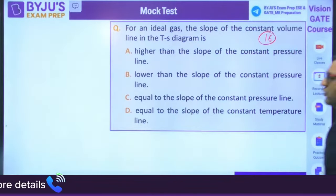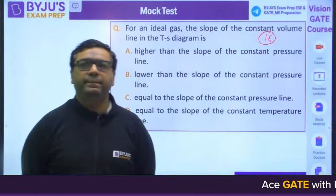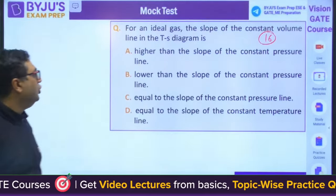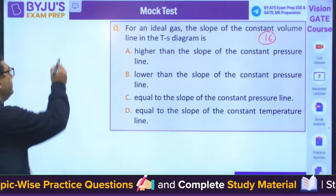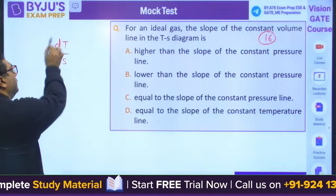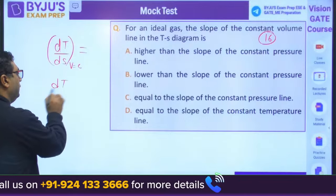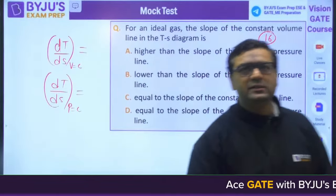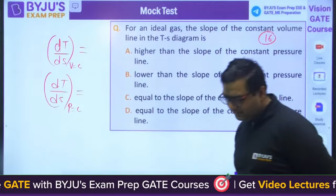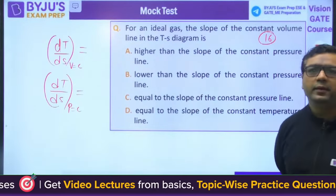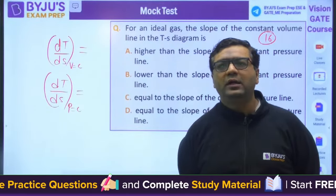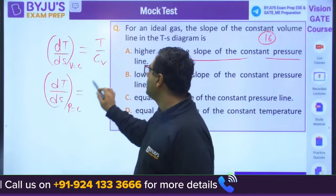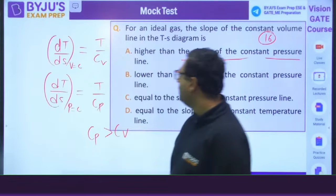Question number sixteen from basic thermodynamics: for an ideal gas, the slope of the constant volume line in the T-S diagram is T/Cv, and the slope of constant pressure line is T/Cp. Since Cp > Cv, the constant volume line has a higher slope than the constant pressure line.